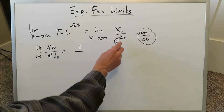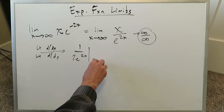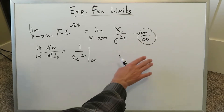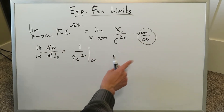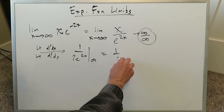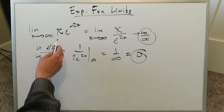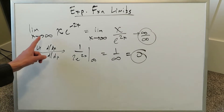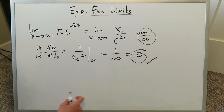Derivative of x is just 1. Derivative of e to the 2x is 2e to the 2x, and you can put infinity in place of x. If the indeterminate form continued, you would keep applying L'Hôpital's rule as needed. But we can see very clearly we'll have something like 1 over infinity, which zeros out. So the limit as x approaches infinity of this function is 0.